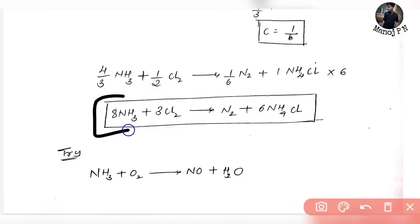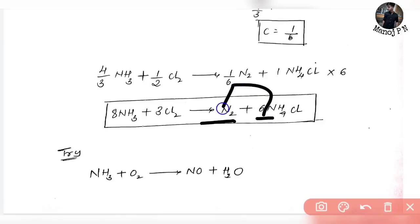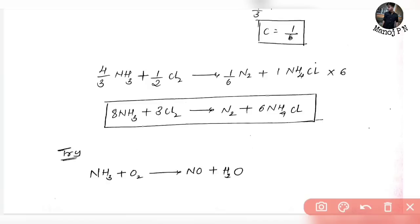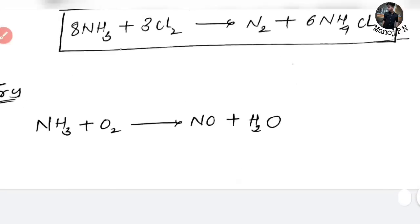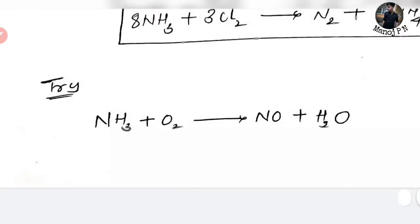The element count: nitrogen — 8 on LHS, 8 total on RHS, nitrogen balanced. Hydrogen: 3 times 8 is 24 on LHS, 24 on RHS — balanced. Chlorine: 3 Cl2 gives 6 Cl on LHS, 6 Cl on RHS — balanced. So the chemical equation is balanced. Try this out and post the equation in the comment section. We will see you in another video with an amazing trick — till then keep learning, thanks for watching.